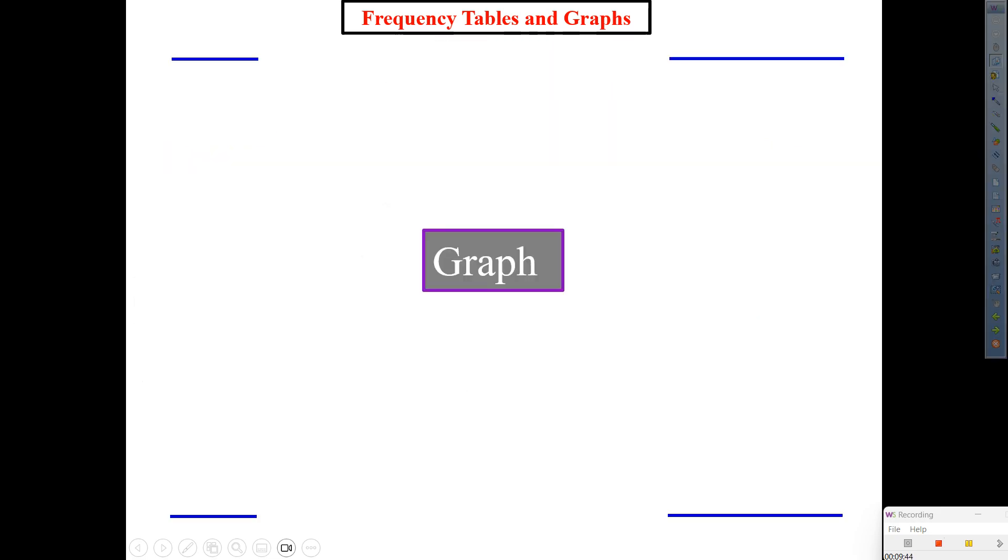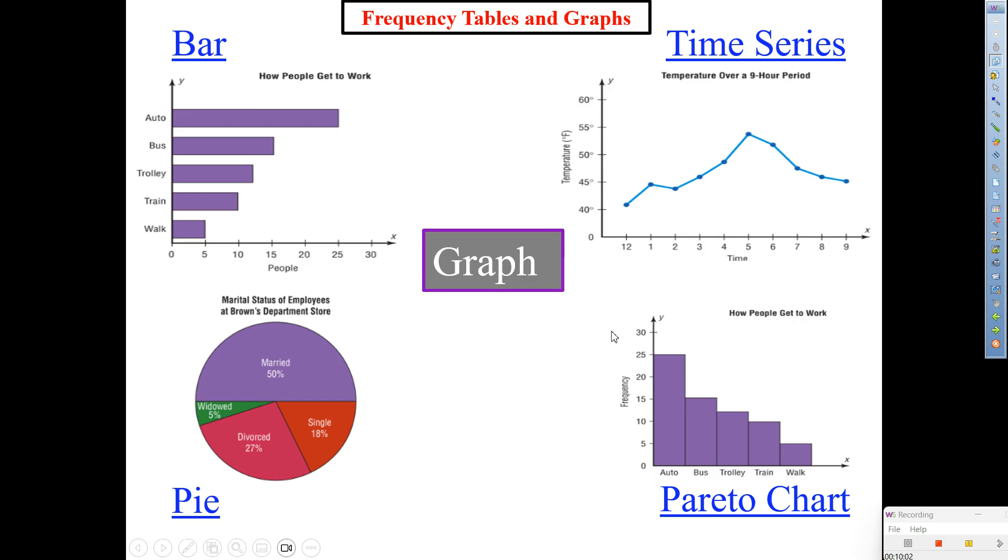And from there, we moved on to the next four. So type them in there. Next four. Ten, nine, five, three, one. Bam. Bar graphs, time series, pie graphs, and Pareto. And once again, a reminder on Pareto is from greatest to least of the data.